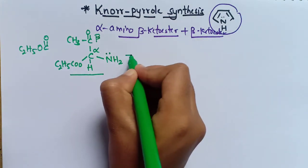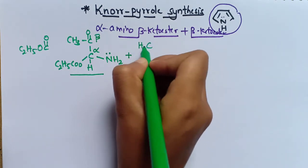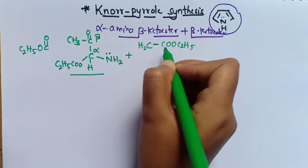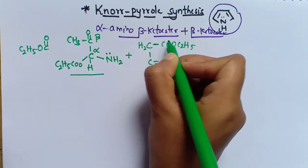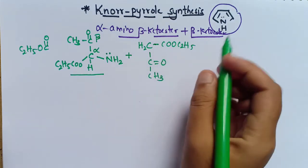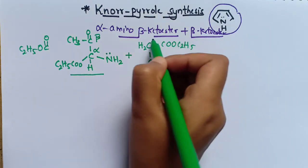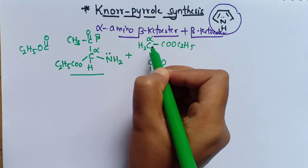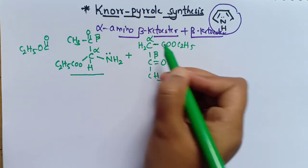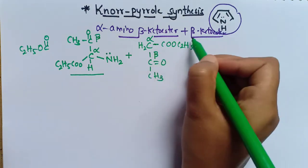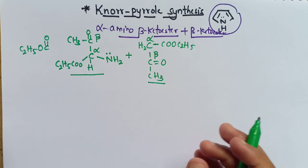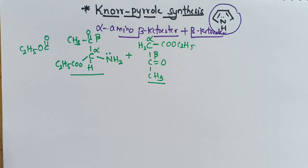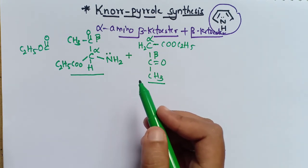Now coming to the other reactant, beta-keto ester. Beta-keto ester has the structure: CH2-COO-C2H5 and C=O with CH3 attached. The functional group is C=O-O-C2H5. The alpha carbon is directly attached to the functional group, and at the beta position a ketone is attached, so beta-keto ester is the name of this structure. Remember: the first carbon attached to the functional group is alpha, the second is beta.